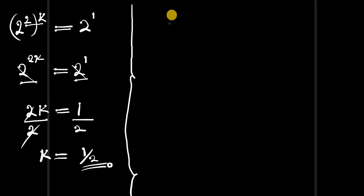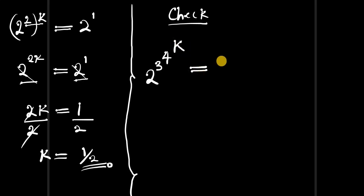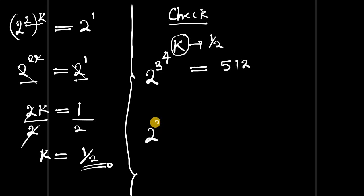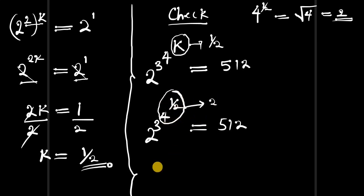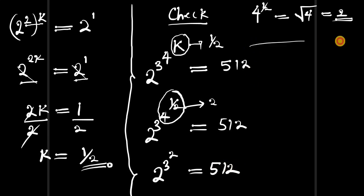Let's check if k = 1/2 truly satisfies the equation. We record the problem: 2^(3^(4^k)) equals 512, and we discovered that k equals 1/2. Substituting, we have 2^(3^(4^(1/2))) must equal 512. Now, 4^(1/2) equals the square root of 4, which equals 2. So the equation becomes 2^(3^2) equals 512.